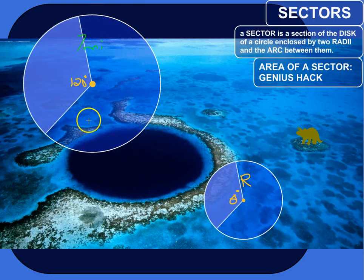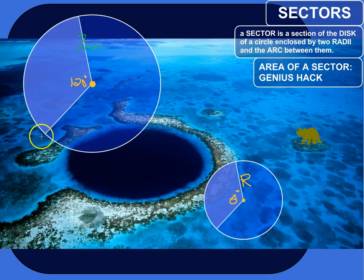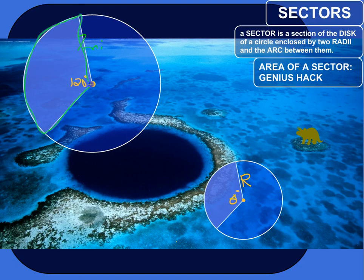The sector is shaded in blue. It's a section enclosed by two radii — radii is just the plural for radius. So I've got a radius here, from here to here, and a radius from here to here, and the arc between the two radii. Radius, arc, radius — that bounds off the space of this sector.